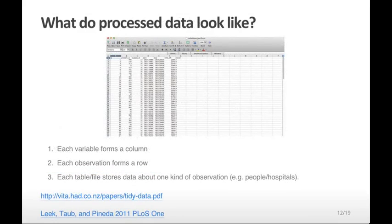So what do processed data look like? They look something like this. This is an example from a paper that we published in 2011 on peer review. Each variable appears in one column, and each row corresponds to one observation. So for example, this column only contains the variable on which time the review was completed. Meanwhile, this row contains all the information about that particular review.